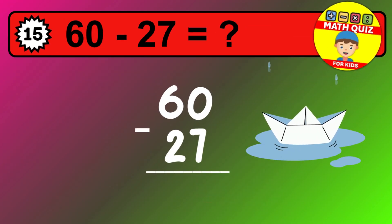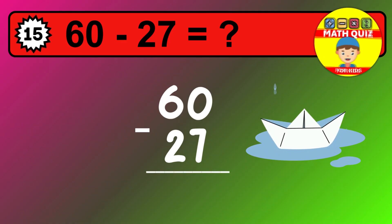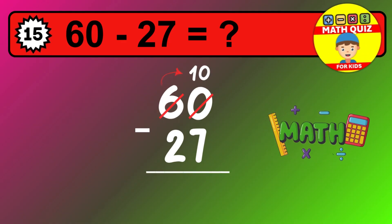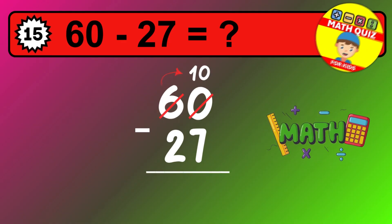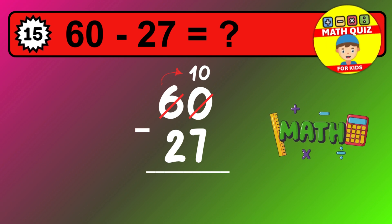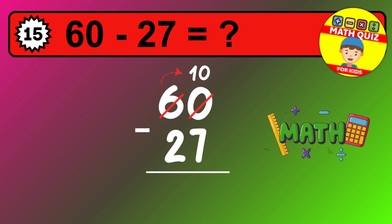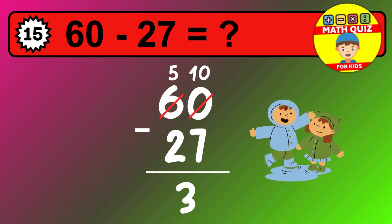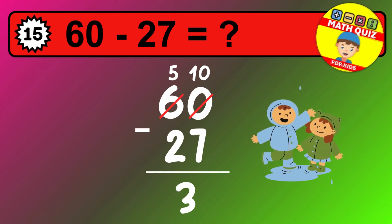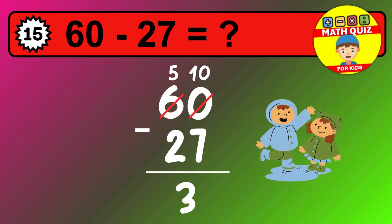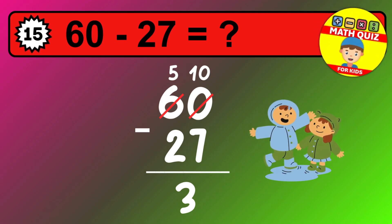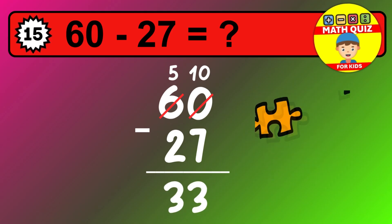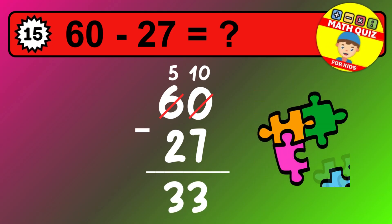Let's solve this step by step. We start with the units. 0 minus 7 is not possible, so we need to regroup. We take one 10 from the tens column. Now we have five tens and the units become 10. Now we subtract. 10 minus 7 is 3. Then we go to the tens. 5 minus 2 is 3. The final answer is 33.